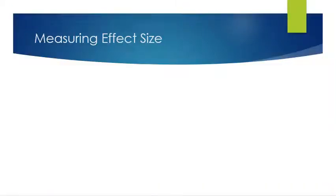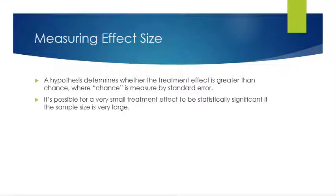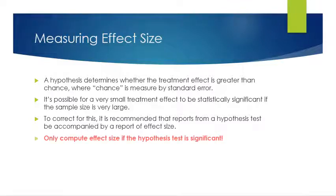Chapter 9, Unit 3. Let's talk about how we measure effect size for a t-test. A hypothesis test determines whether the treatment effect is greater than chance, where chance is measured by standard error. It's possible for a very small treatment effect to be statistically significant if the sample size is really large. So to correct for this, it's recommended that reports from a hypothesis test also be accompanied by a report of effect size.